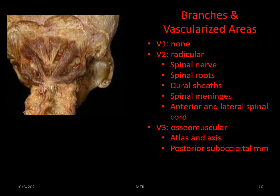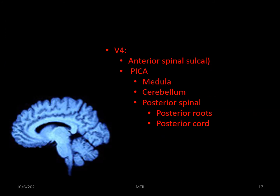The following is a summary of which branches come from where and what they vascularize. There are no branches from V1 and only the radicular from V2. The number of radicular arteries is variable, but rarely is there one for each segment — typically the C5 and C3 segments receive branches. The radicular artery supplies the spinal nerve and nerve roots and their dura, the spinal meninges, and the spinal cord together with the anterior and posterior spinal arteries. V3 gives off osteomuscular branches that supply the axis and atlas vertebrae and the posterior suboccipital muscles. Intracranially, V4 supplies the medulla, cerebellum, and spinal cord via PICA and the anterior and posterior spinal arteries.